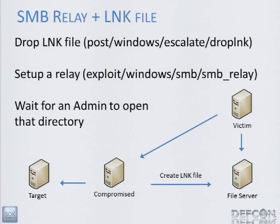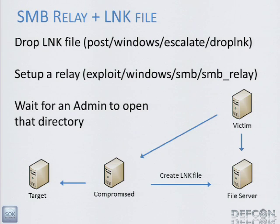A relatively new technique involves dropping an LNK file. LNK files are sort of like symlinks in the Unix world, but they can have an icon — and that icon can be a UNC path. We drop an LNK file on a file server we have access to, with an icon that points back to our server. When a victim opens up that share, the icon is a link to our thing, so it tries NTLM authentication to our box. Once we do that, we can own all the things — a very cool technique.